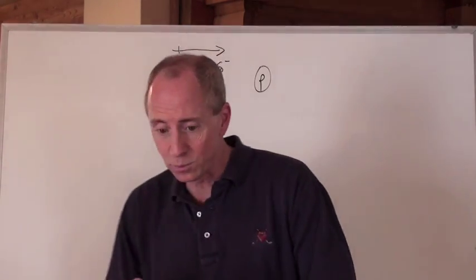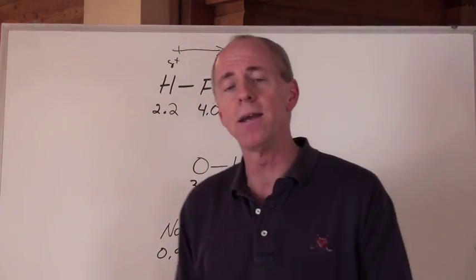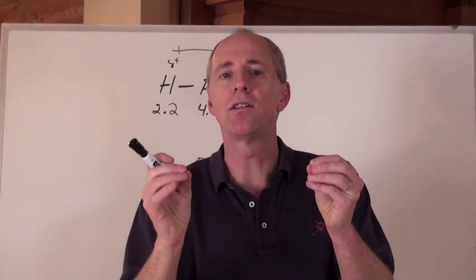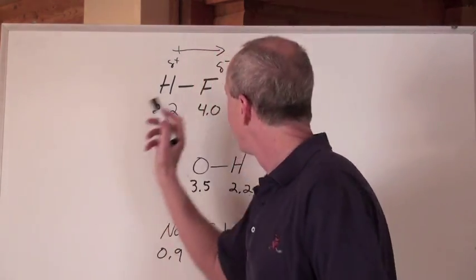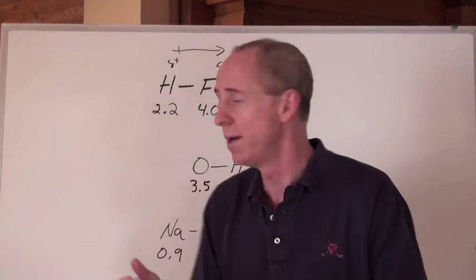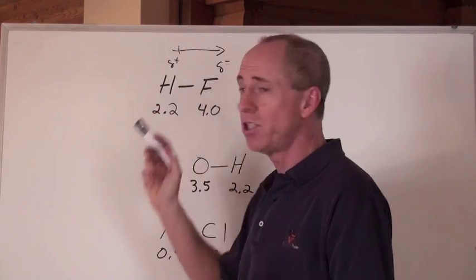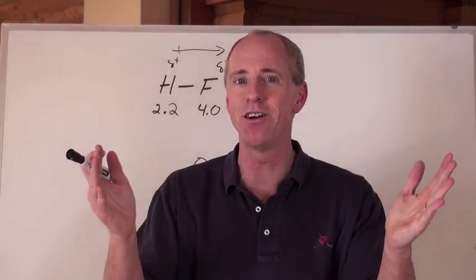So there's an electronegativity difference. The difference there is about 1.8, right? After you get to about 1.8 and greater, the exchange of electrons here is more like not even sharing anymore. Fluorine and hydrogen are pretty much at the boundary between something that's covalent and ionic.